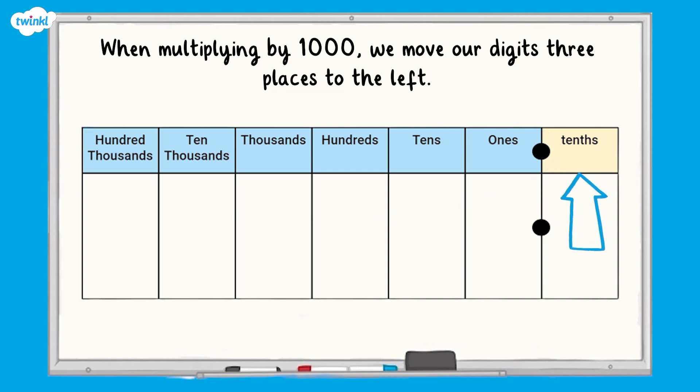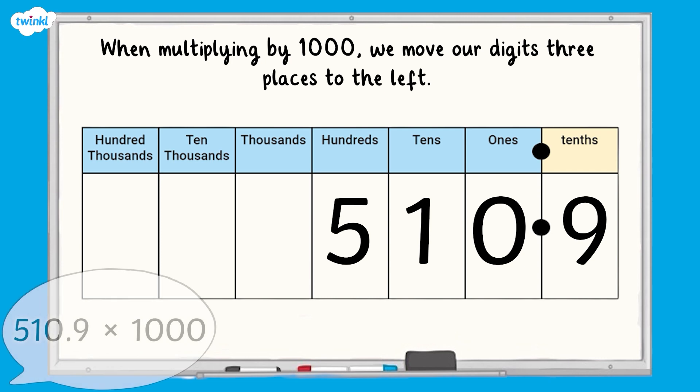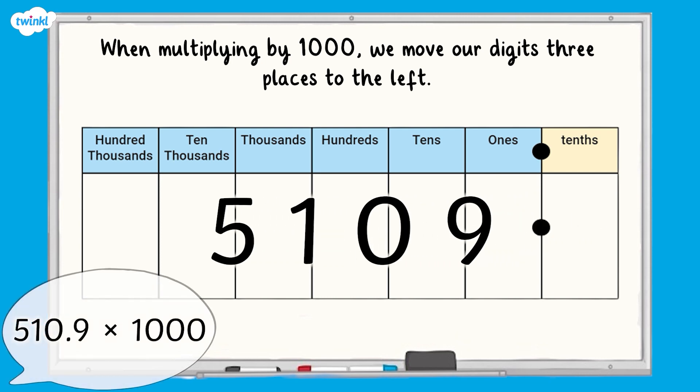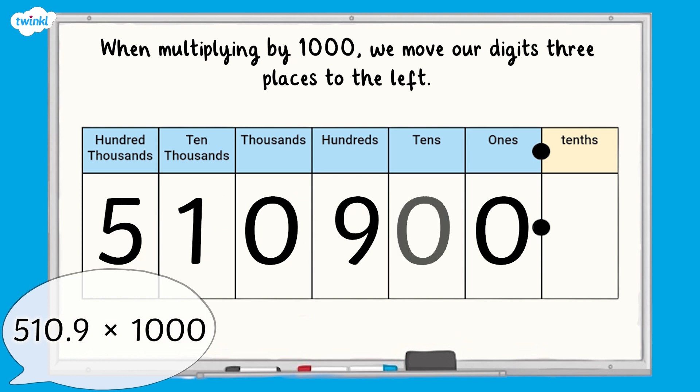Here is the number 510.9 on our place value chart. We are going to multiply our number by 1000. We already know that when multiplying a number by 1000, we move our digits three places to the left. As you can see, 510.9 multiplied by 1000 is 510,900.